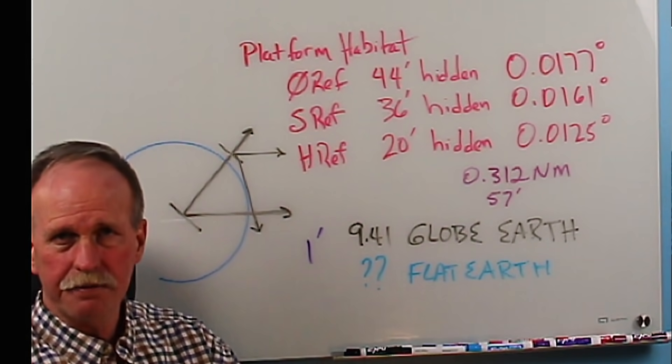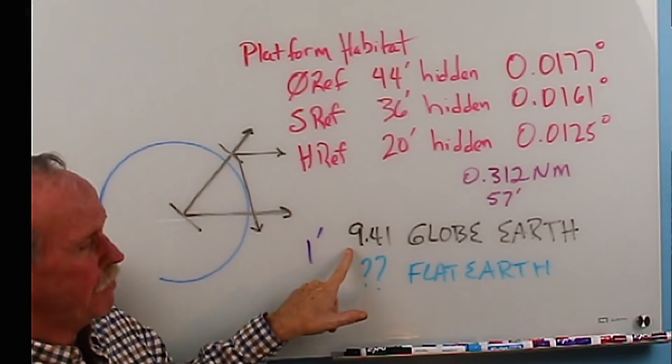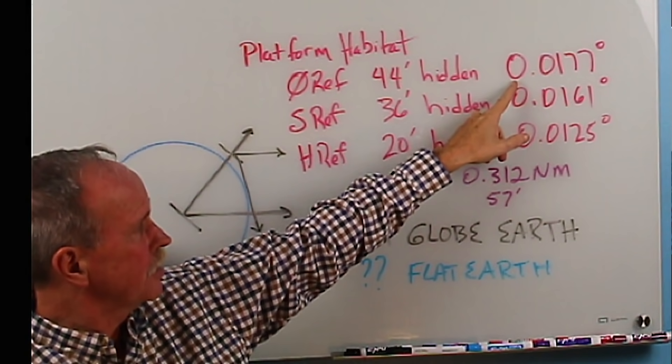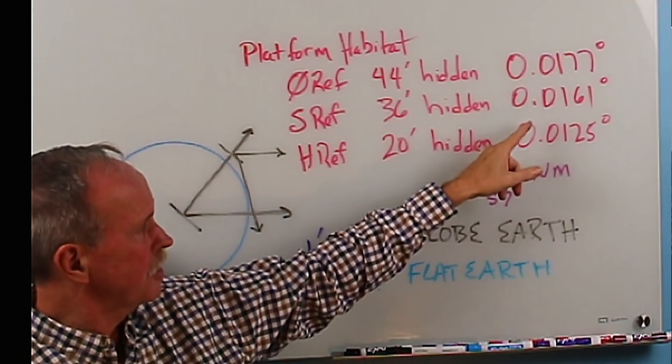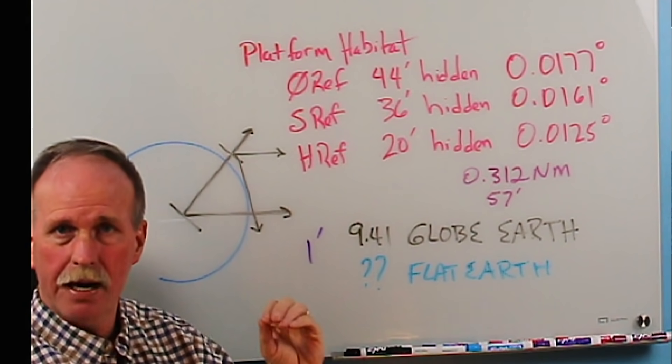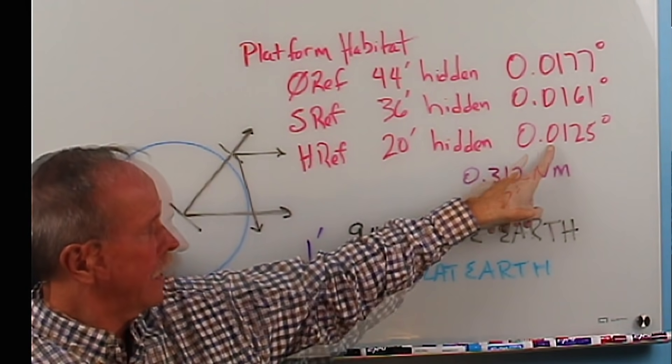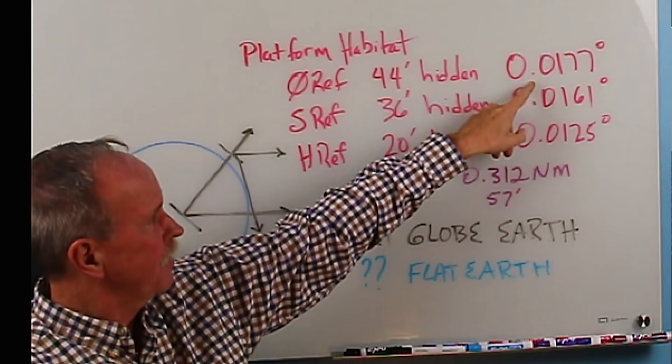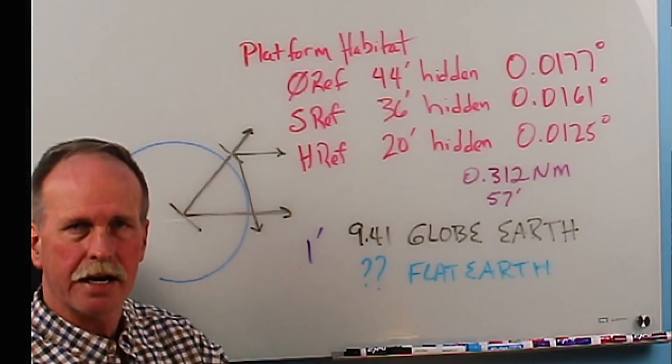But that's neither here nor there. If you go to Walter Bisland's advanced earth curve calculator, we've used it many times, I'll stick a link to it in the description. If you put in a zero refraction day using 9.41 miles and one foot of observer height, you'll find that there's 44 feet hidden and the angle to the horizon is 0.0177 degrees. On a standard refraction day you have 36 feet hidden and 0.0161 degrees down to the horizon. You see it's a little higher. Now on a severely refracted day, like from the black swan image, where only 20 feet is hidden, if you find out what a level of refraction is required to make 20 feet hidden, the angle to the horizon is 0.0125 degrees.